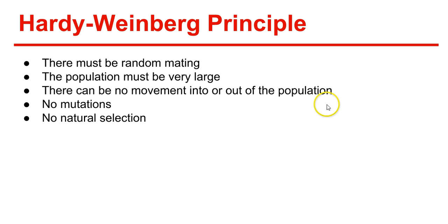Third, there can be no movement into or out of the population — no new alleles can come in from new individuals, and alleles cannot leave the population. Fourth, regarding mutations: because almost all genetic variation results from mutation, if there are no mutations, there can be no new alleles. Fifth, no natural selection — if there's no natural selection, all genotypes must have the same chance of survival and reproduction.